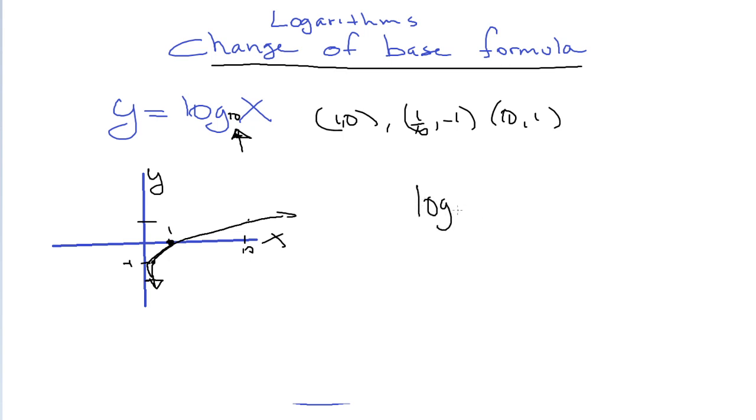So if we have log base 2 of 5, we can change this to log base 10 of 5 divided by log base 10 of 2. And as you know, your calculators are equipped to handle log base 10 of 5. In fact, that's the default, log base 10 of 5. If we divide that by log base 10 of 2, we get a decimal. You get about 2.32.